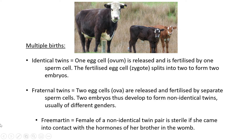Then you have fraternal twins, which also occur in humans. Here two egg cells are released and fertilized by separate sperm cells — two eggs, two sperm — producing two embryos that develop into non-identical twins. For cows these are often different genders, since one sperm could be XX and the other XY, though you can also get non-identical twins that are both the same gender — two heifers or two bulls.